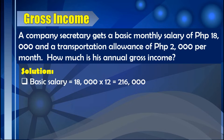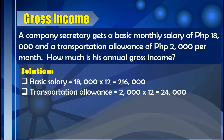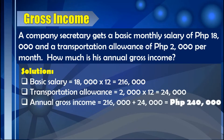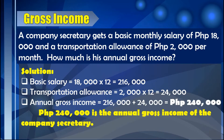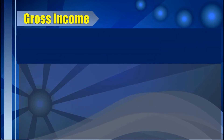For the additional allowance, which is the transportation allowance of P2,000 per month, we multiply P2,000 by 12 months, giving us P24,000. Adding both amounts, P216,000 plus P24,000, the annual gross income of the company secretary is P240,000.